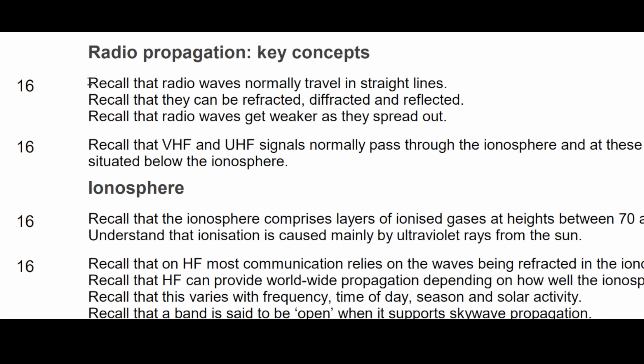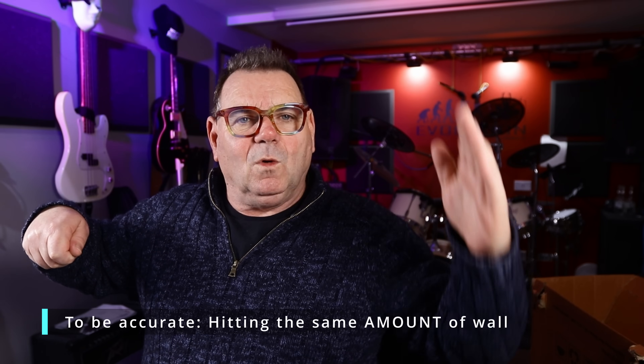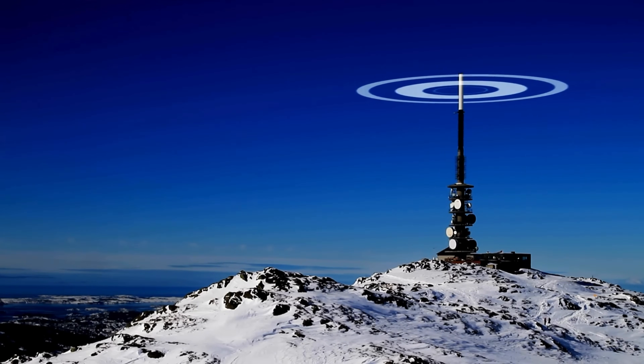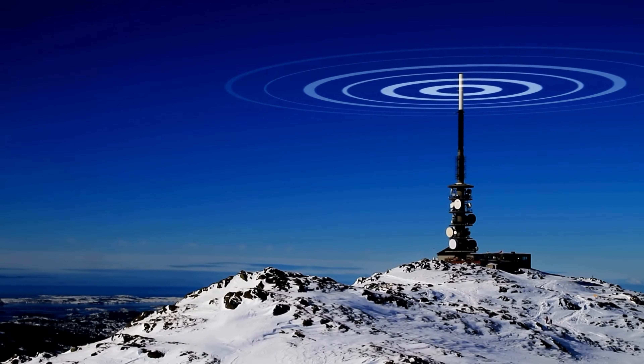The syllabus says we need to recall that radio waves travel in straight lines — just like a torch beam, which goes in a straight line without wiggling. Also, if you double the distance between you and a wall where you're shining your light, the amount of light hitting that wall will be reduced by a factor of four. So every time we go further away, our signal gets weaker.